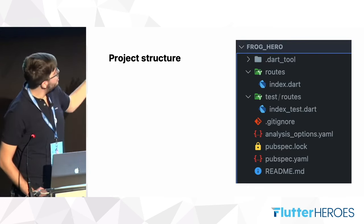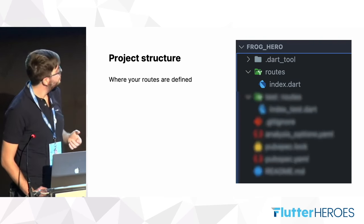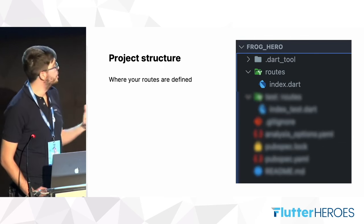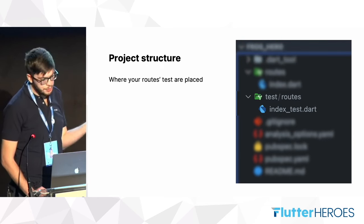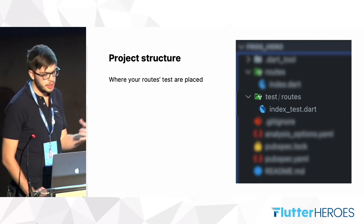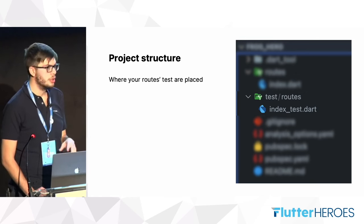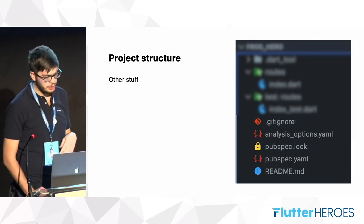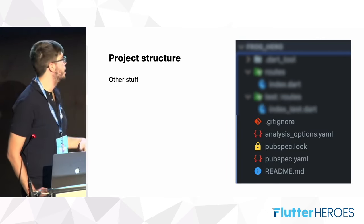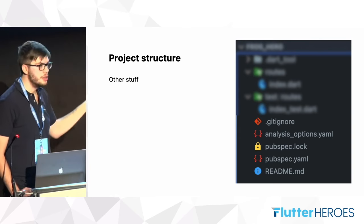We can identify three fundamental parts. The first is the routes folder — here we place the endpoints, the routes of our middleware. The second is the test folder, where you can place unit tests and integration tests for the routes. And the last part is the other stuff, like analyzer rules, linter rules, and the pubspec.yaml for dependency declarations.